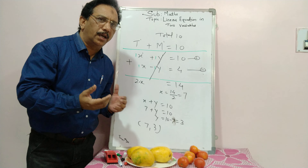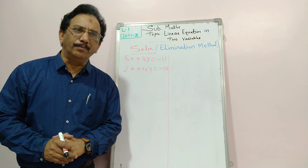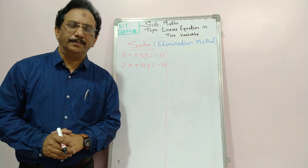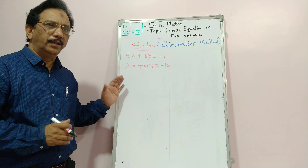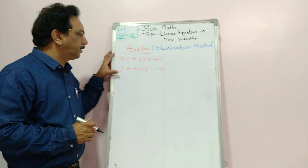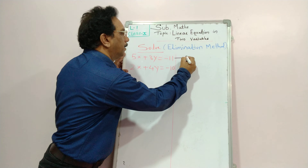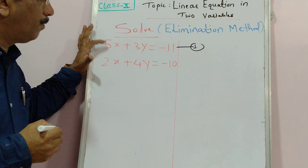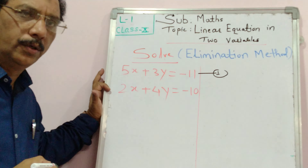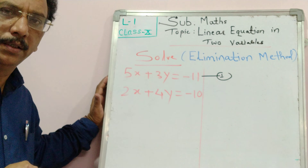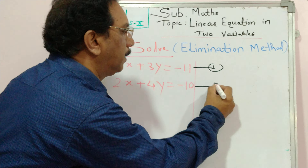Let us discuss one more problem using the elimination method. The pair of linear equations is: first equation, 5x plus 3y is equal to minus 11, and second equation, 2x plus 4y is equal to minus 10.